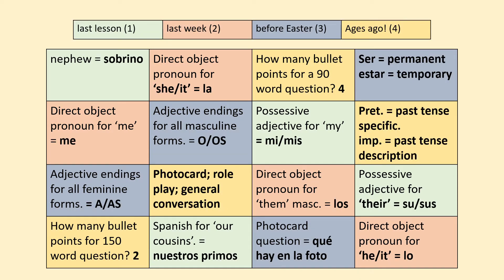Okay, hopefully we have got the following answers. Total up the points you would have scored. If you wrote 'sobrino' for nephew, that's one point. 'La' for the direct object pronoun is worth two points. Adjective endings for all masculine forms — o and os, singular and plural — is worth three points; if you only put one answer, give yourself one and a half. The yellow is four points — for example, how many bullet points for a 90-word question: the answer is four.